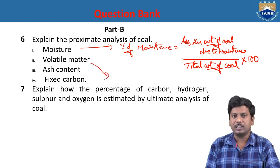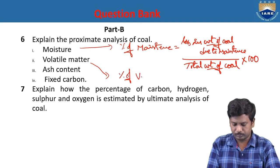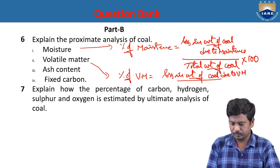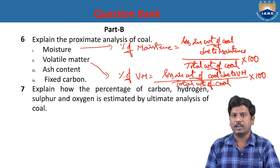Volatile matter is determined by taking a coal sample in a furnace and heating it to about 700 to 750 degrees centigrade. The weight of the coal reduces due to the evaporation of volatile matter. The percentage of volatile matter equals the loss in weight of coal due to volatile matter divided by total weight of coal, multiplied by 100.